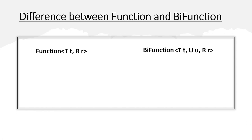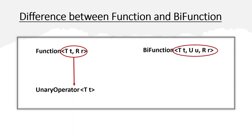In our previous video, we saw that whenever the input type and the return type of a Function are the same, we should use a special interface called UnaryOperator. A somewhat similar case applies here: whenever both the input types of the BiFunction and the return type are the same, we should not use BiFunction. Instead, we should go for a special interface called BinaryOperator.